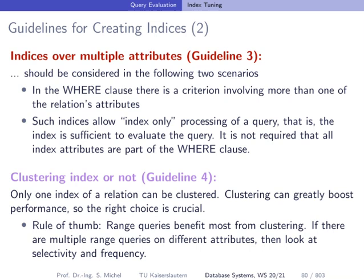Guideline 3: indices over multiple attributes — that is, composite indices. As seen in the movie rental example with Elm Street, Arizona, and Jensen: if the WHERE clause has a predicate involving multiple attributes of a relation, you can consider creating a composite index to speed up retrieval. Sometimes these indices also allow the query to be answered only by looking at the index, without going to the data file at all — these are called index-only queries.